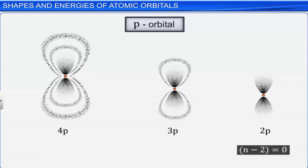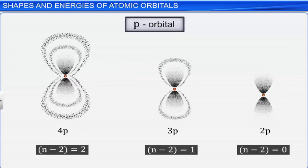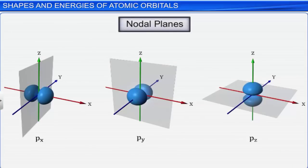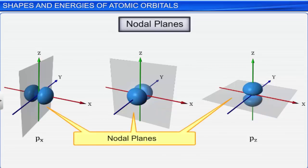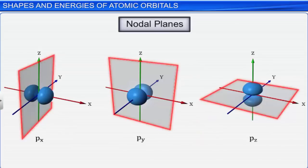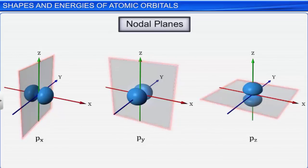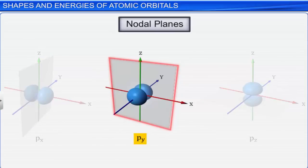In addition to radial nodes, for P and D orbitals, the probability density function is also 0 at planes passing through the nucleus. These planes are called nodal planes. The number of nodal planes for a P orbital is 1 — that is, the plane which passes through the origin at which the probability of finding an electron is 0 is called a nodal plane. For example, the nodal plane for the P_y orbital lies along the x-z plane. Nodal planes are also called angular nodes, and the number of angular nodes for a P orbital is equal to the value of azimuthal quantum number l.